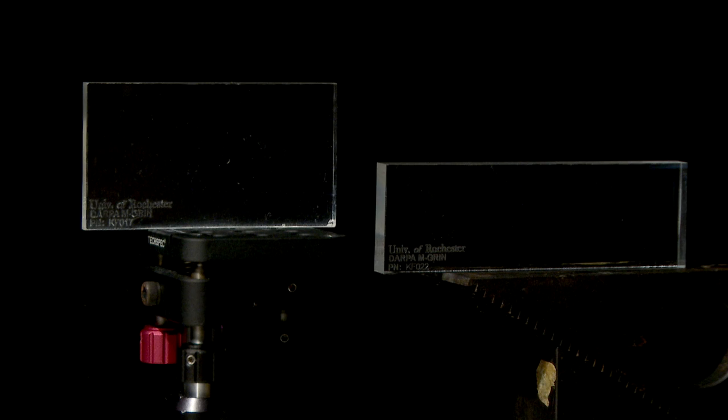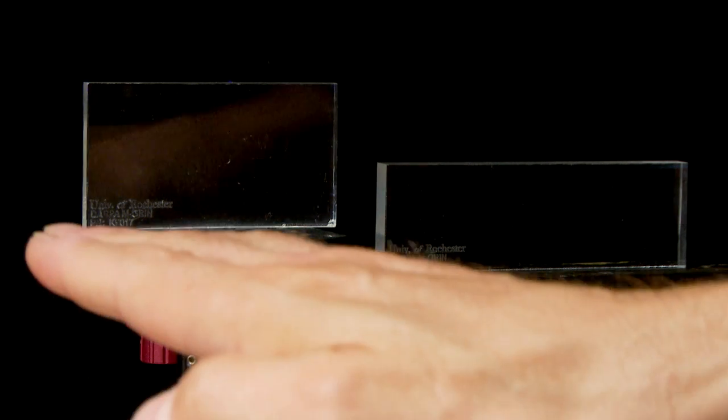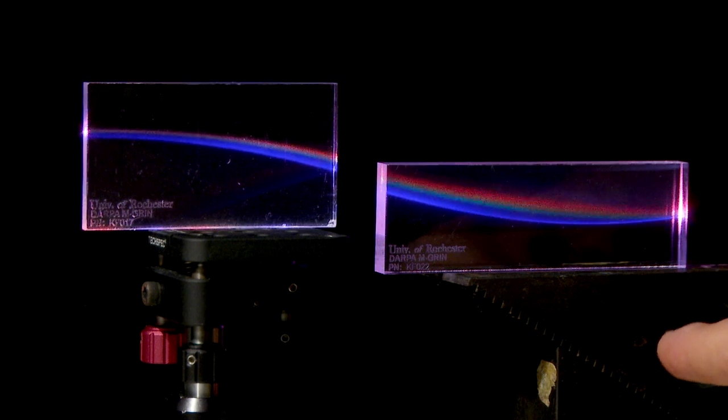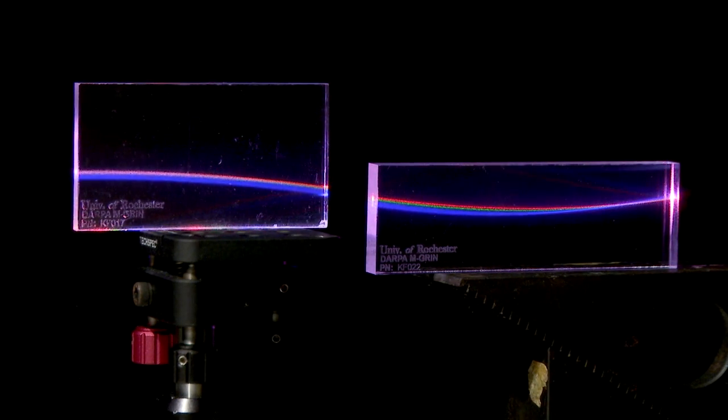Here, we're using two gradient index blocks. The first one on the left is going to bend the light down and separate the colors. The second block is going to bend the light back up and bring the colors back together.